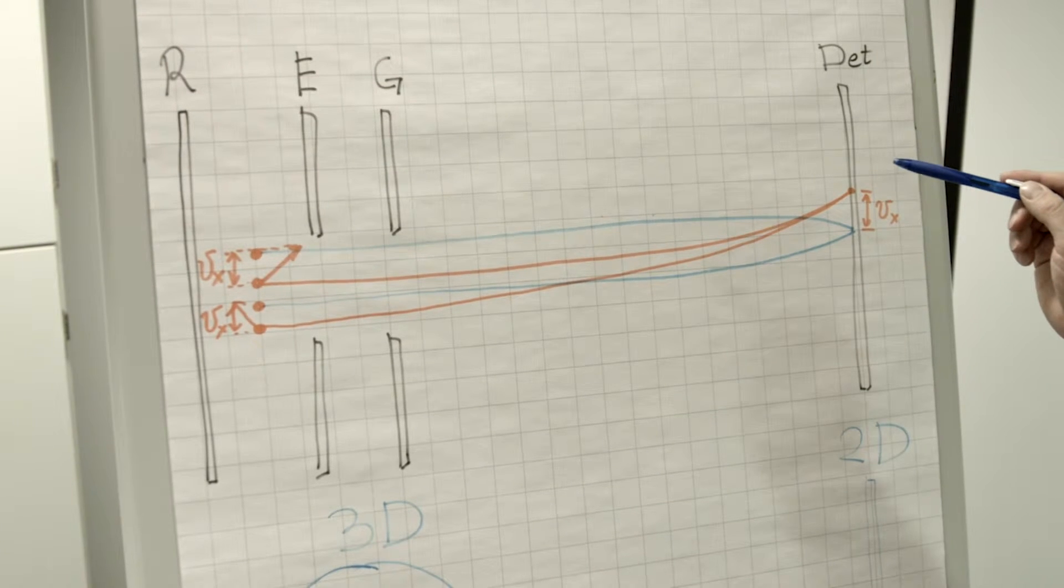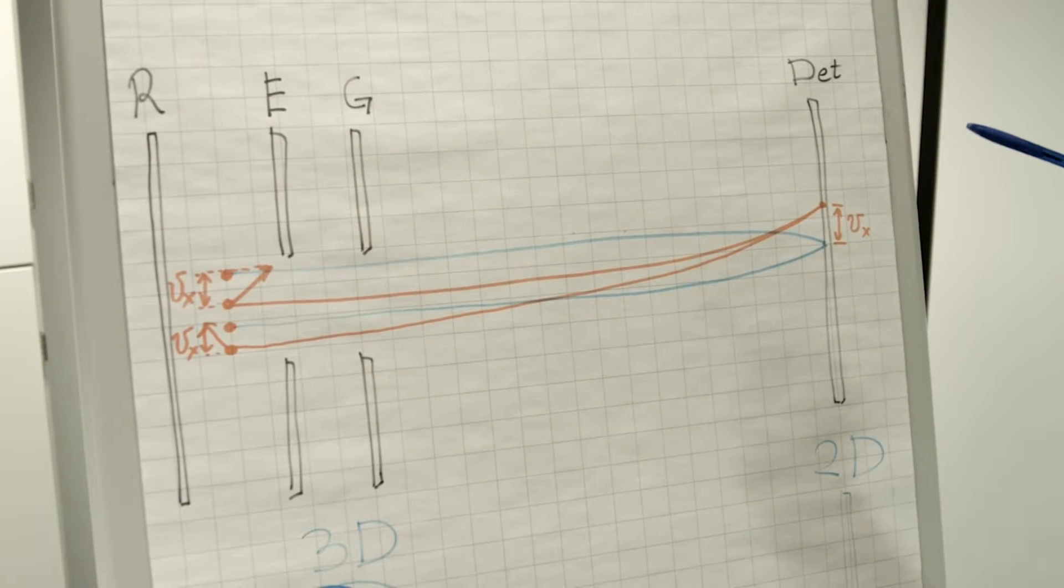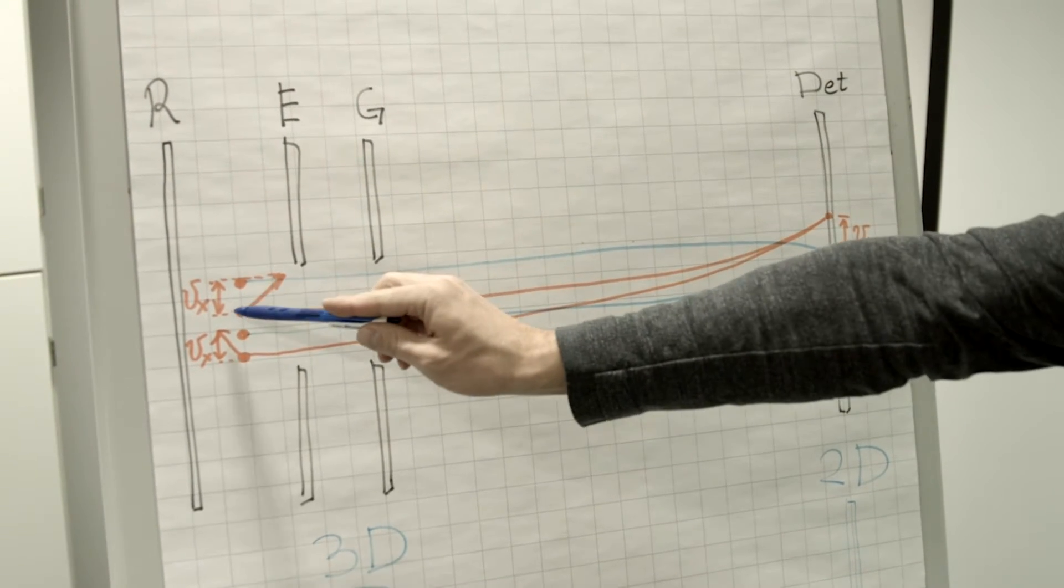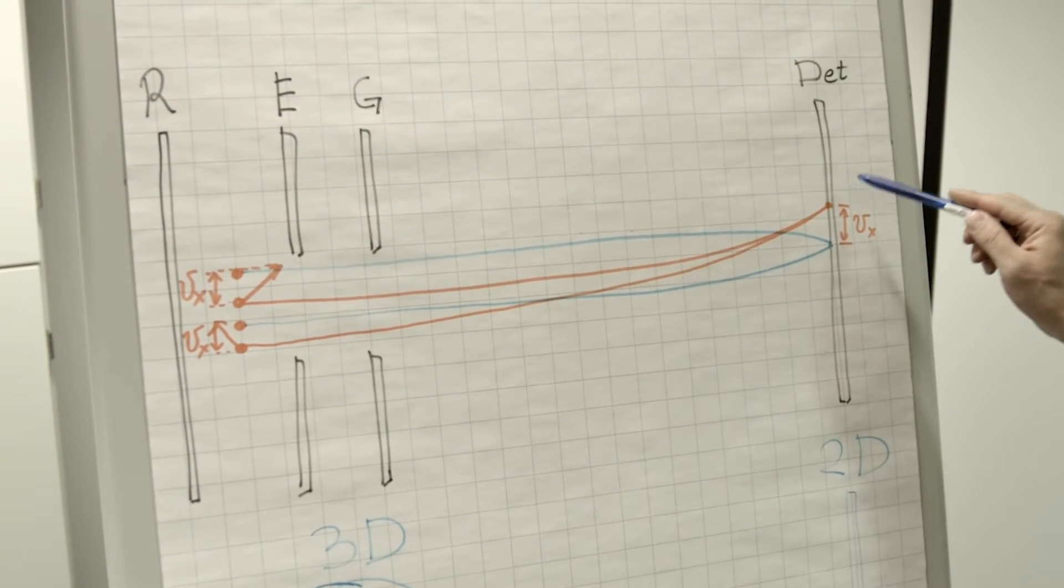If the particles have drift velocity in a direction perpendicular to the axis of the spectrometer, they hit the detector at a spot away from the center. Here, two orange trajectories demonstrate particles which have the same drift velocity perpendicular to the axis. They both hit the detector offset from the center.